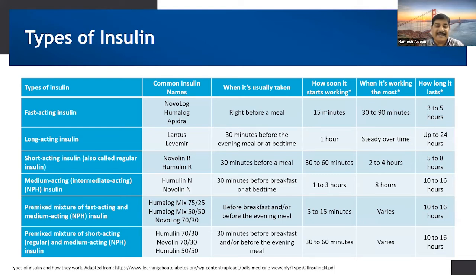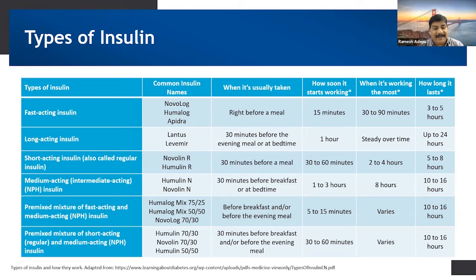Pre-mixed mixtures of fast-acting and medium-acting insulins — like Humalog in different concentrations such as 75/25, 50/50, and 70/30 — need to be taken before breakfast and before the evening meal. They start working in 5 to 15 minutes and last up to 10 to 16 hours. Pre-mixed mixtures of short-acting and medium-acting insulins — like Humulin 70/30 and Novolin 70/30 — need to be taken 30 minutes before breakfast and before the evening meal, and work for almost 10 to 16 hours.